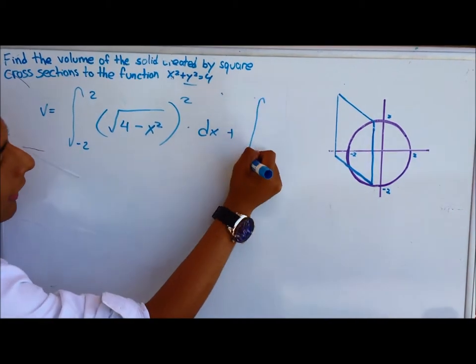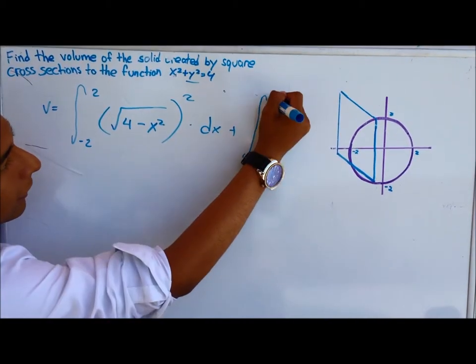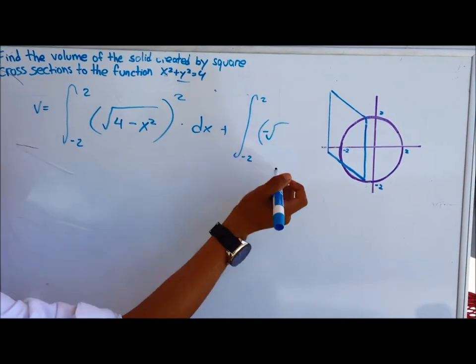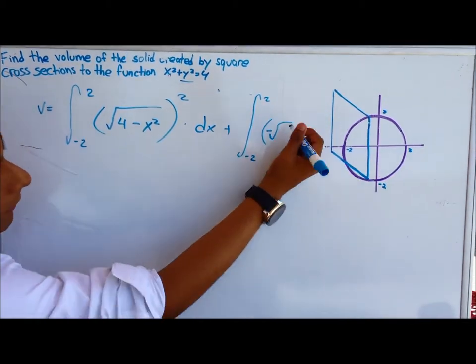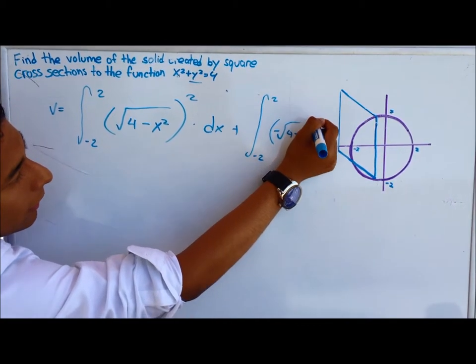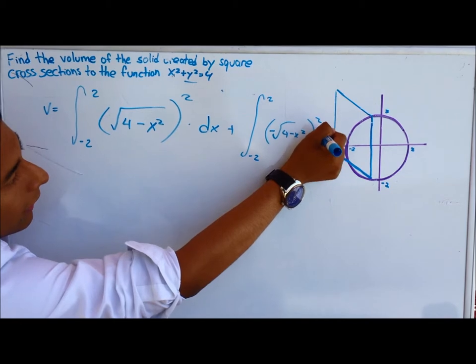Plus again, the integral from negative 2 to 2 of the function again, but this time negative due to the fact that there's a bottom side of the circle, of 4 minus x squared all squared again dx.